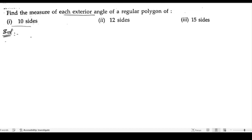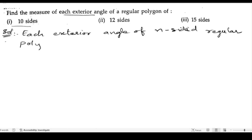Before starting, we should know the formula. The formula we have learned is: each exterior angle of an n-sided regular polygon is 360 by n. If there is a polygon that is having n sides, then that will be 360 by n. This is the formula.